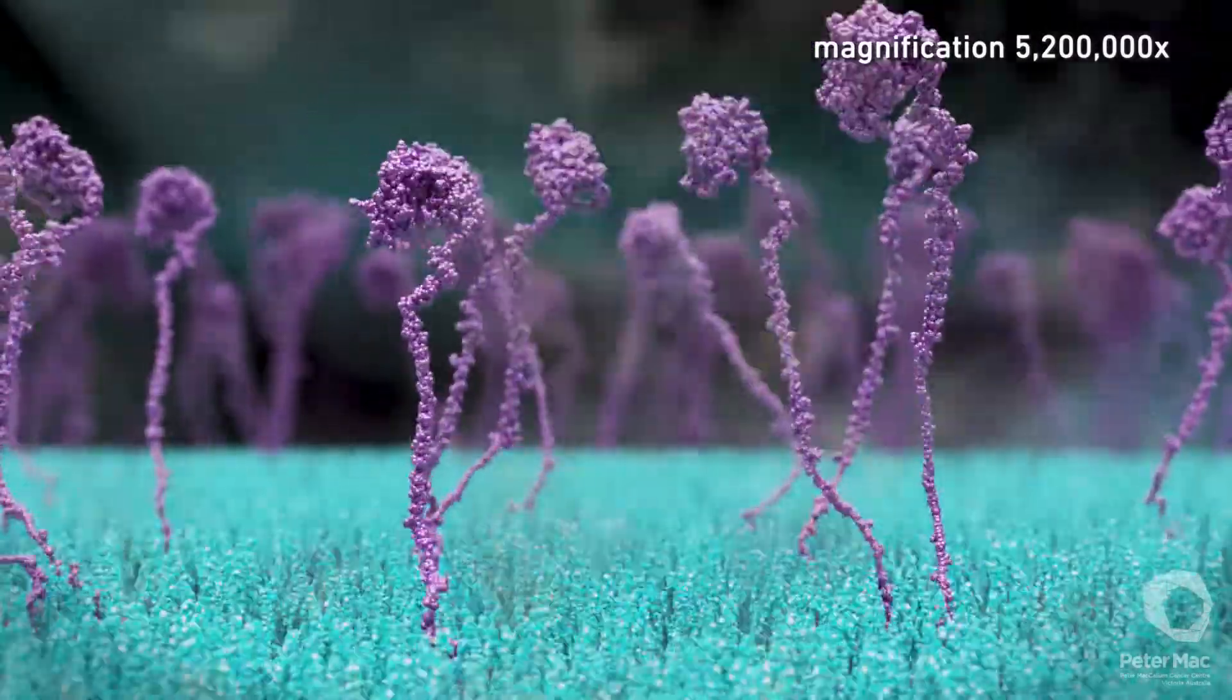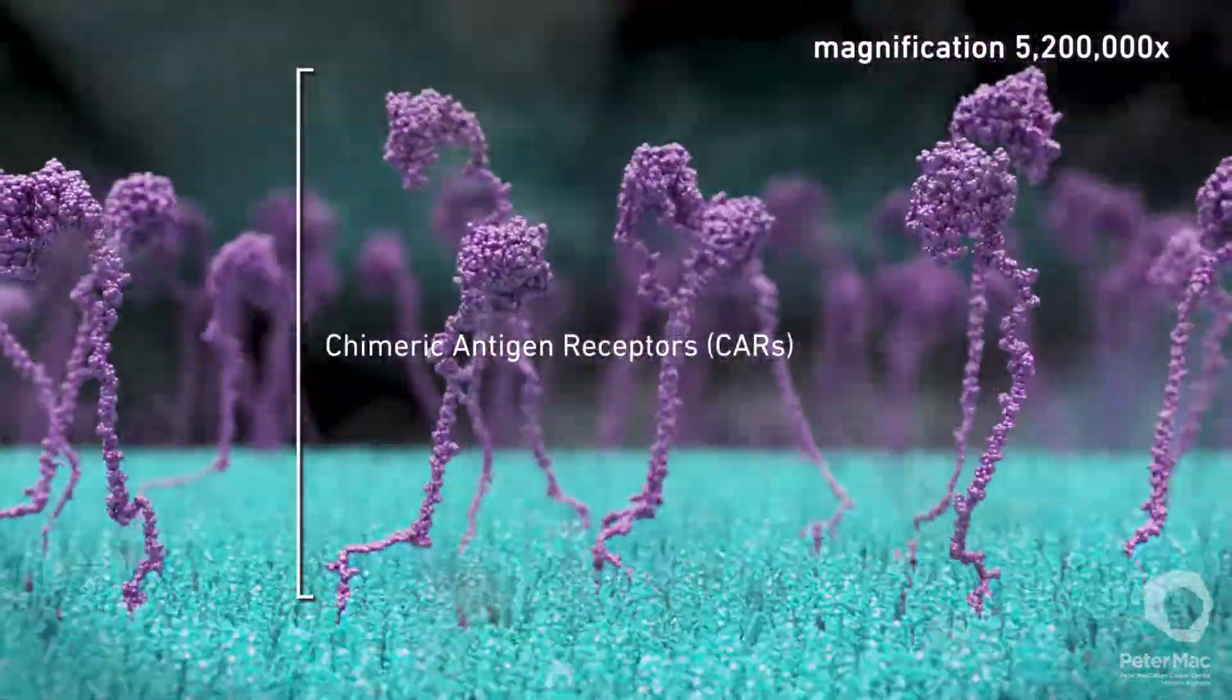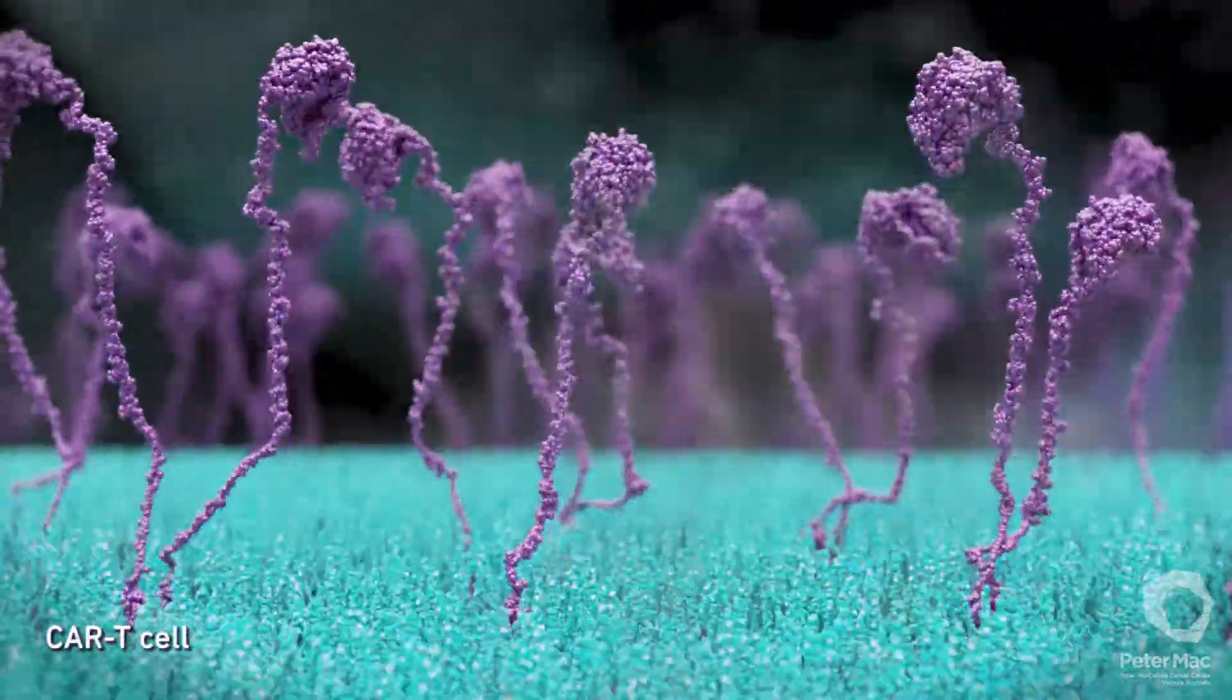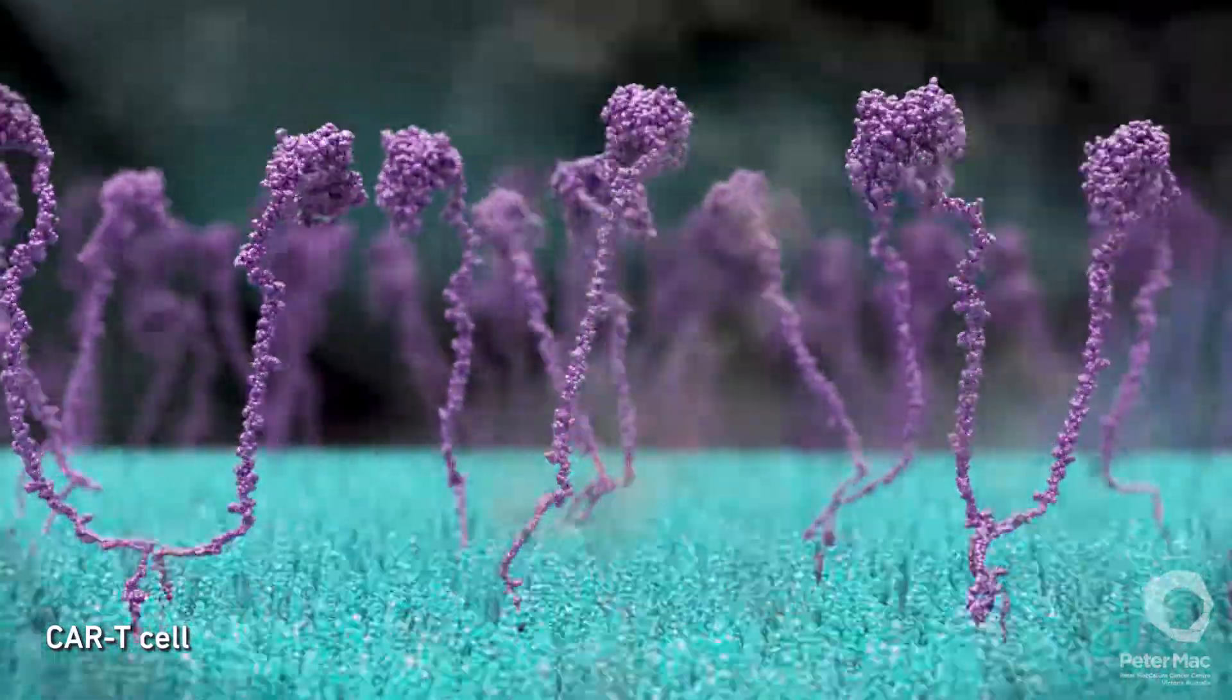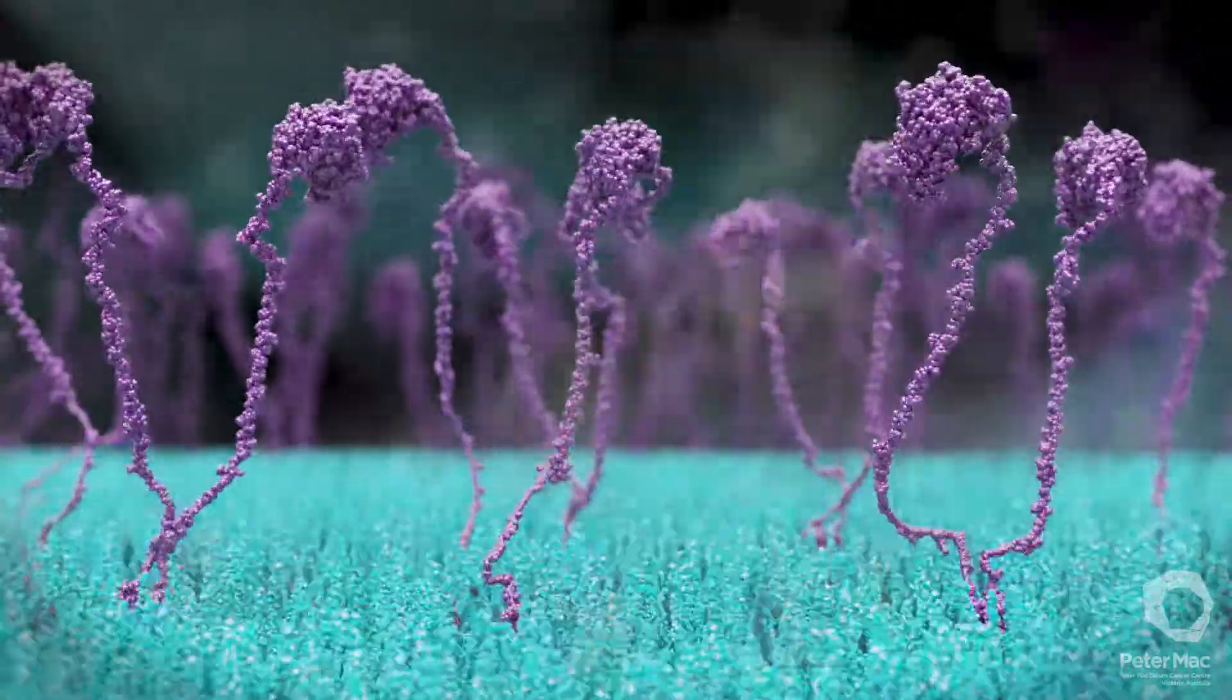In the laboratory, the T-cells are instructed to produce special receptors called chimeric antigen receptors, or CARs, on their surface, making them into CAR T-cells. The CARs consist of different components that occur naturally in cells but which are never found together.